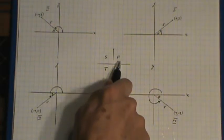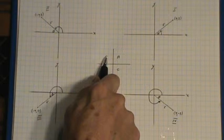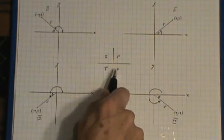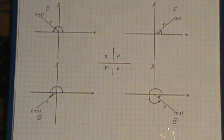They're all positive in quadrant 1, sine is positive in 2, tan is positive down here in quadrant 3, and cosine is positive in quadrant 4.